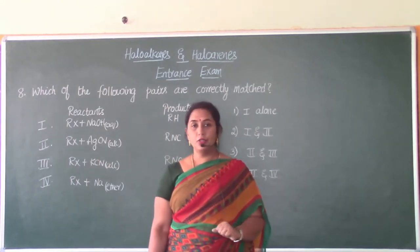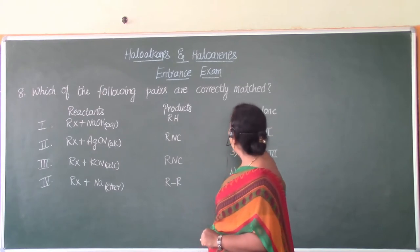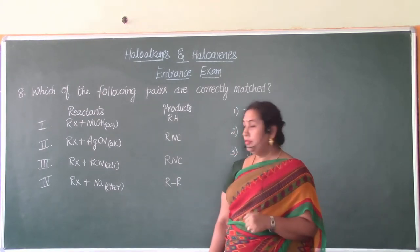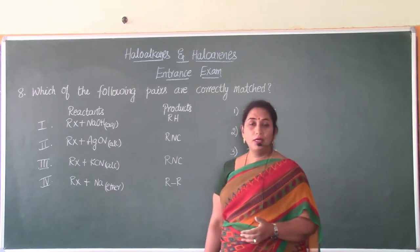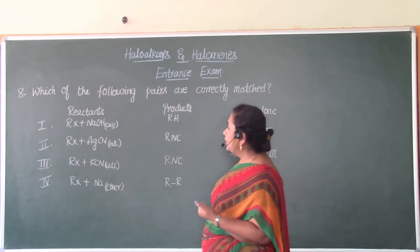Okay, now let's take up the next question. So let's see what it is. Which of the following pairs are correctly matched? So we need to find out which of the pairs that have been given to us has been correctly matched where on one side we are having the reactants and on the other side the products.